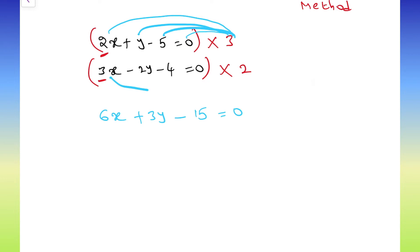Now, second equation also same. 3x into 2, 6x minus as it is. 2y into 2, 4y minus as it is. 4 into 2, 8 equals to 0.